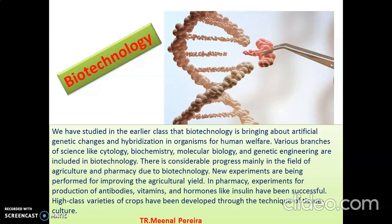We have already studied in 9th standard that biotechnology is bringing about artificial genetic changes and hybridization in organisms for human welfare. In that genetic structure, we are bringing artificial changes and hybridization, which means mixing 2-3 varieties for the welfare of humans. Various branches of science like cytology, biochemistry, molecular biology, and genetic engineering are included in biotechnology.